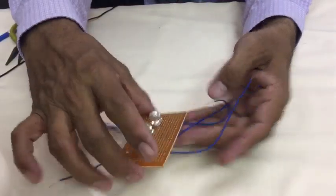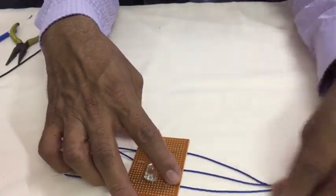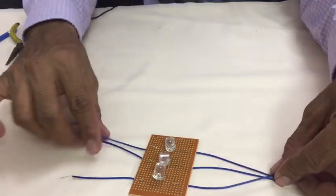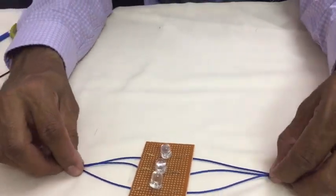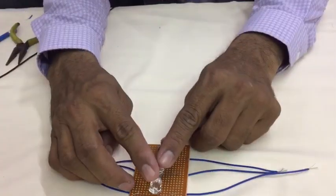Your parallel combination is ready. All positives are connected to one point here and all negatives are connected to another point here. This combination is bulbs in parallel combination.